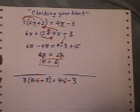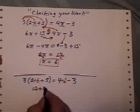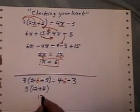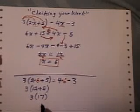Okay, now if I have done it correctly, then when I work it out, the left-hand side will equal the right-hand side. So, 2 times 6 is 12. 12 plus 5 is 17. And 3 times 17 is 51.